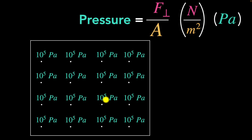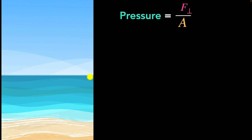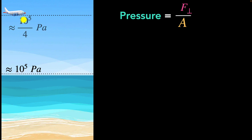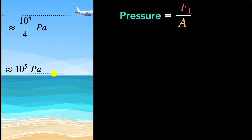But if we zoom out and look at the entire atmosphere, that's not the case. That 10 to the power of 5 is the pressure close to sea level. If you go up to 10 kilometers — the cruising altitude of commercial airplanes — the pressure is about one-fourth of what we find at sea level. Why? Because the molecules at sea level are carrying the weight of the entire atmosphere on top of them. But molecules at higher altitude only carry the weight above them, not the lower air. That's why pressure is lower at higher altitudes — pressure depends on height.